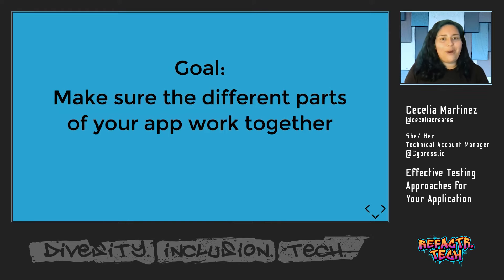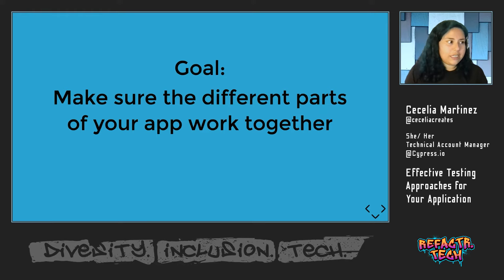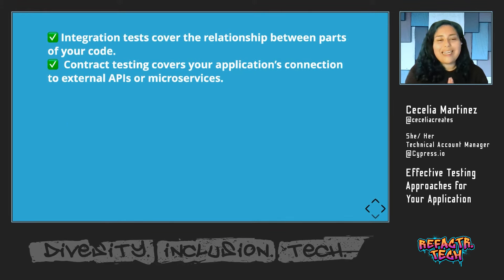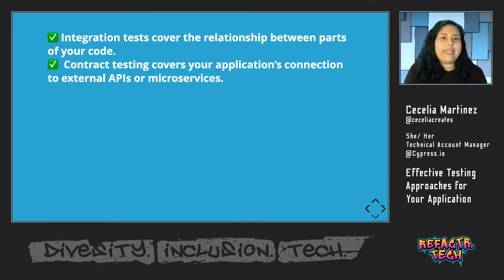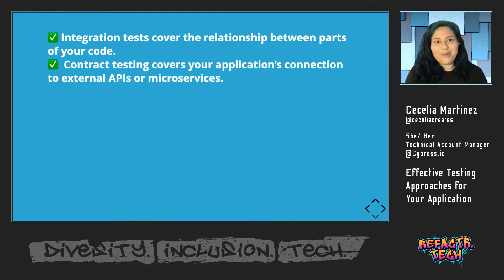The next goal is making sure that the different parts of your app work together. With unit tests, you don't necessarily get that desired outcome, so this is done with integration tests and contract testing. Integration tests cover the relationship between parts of your code — does the front end connect well with the back end? If you have large classes with multiple methods, are they working well together with other classes on the front end? Contract testing is a newer type of testing that covers your application's connection to external APIs or microservices. This is becoming more popular as microservices become more popular, and we're seeing that a lot with modern applications.